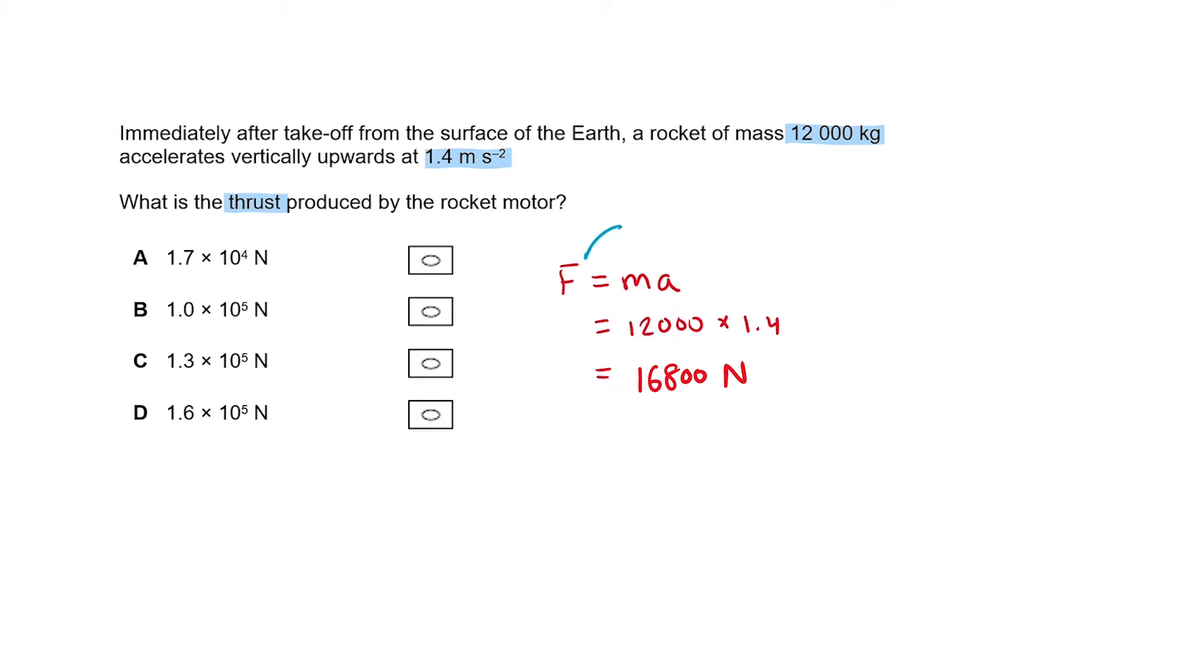We forgot that the force F in F equals MA is the resultant force of the rocket, and not just the thrust. There is thrust from the motor acting upwards, but acting in the opposite direction, we have weight of the rocket. So the resultant force of the rocket must be thrust minus the weight.